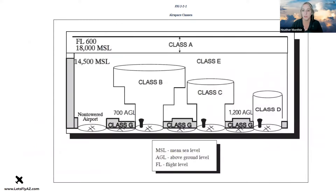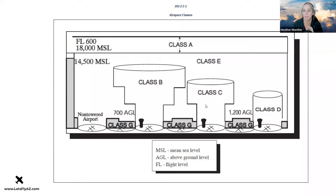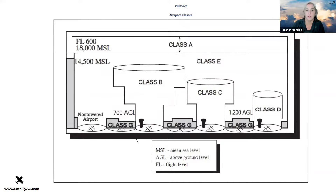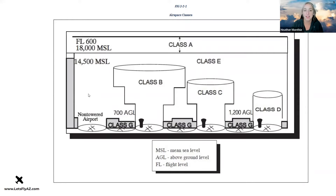Here's a quick reminder of the upside-down wedding cake diagram from the AIM showing all airspace types. Class D is a cylinder shape. Class C starts at the surface and branches out as you go higher. Class B has an additional layer on top of that. Class G airspace is near the ground, and everything else is Class E. From 18,000 feet MSL to flight level 600 is Class A airspace.